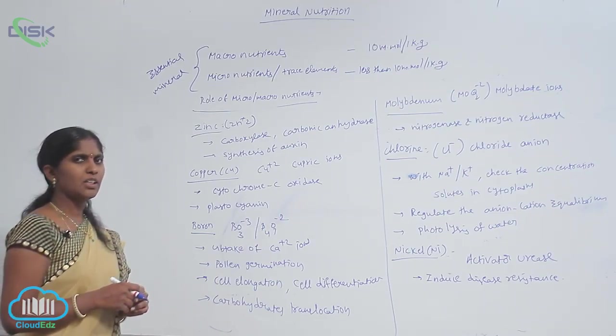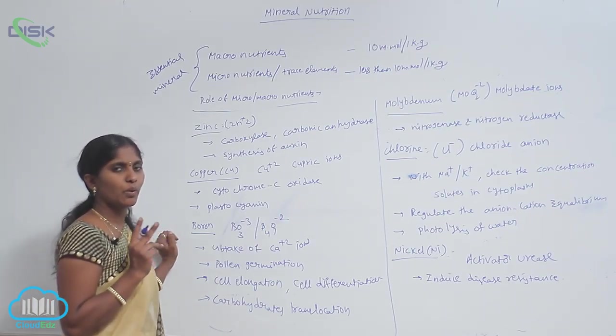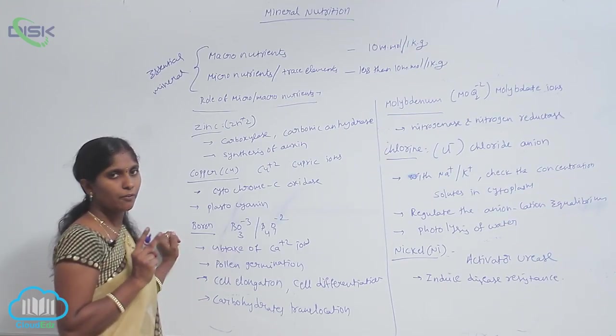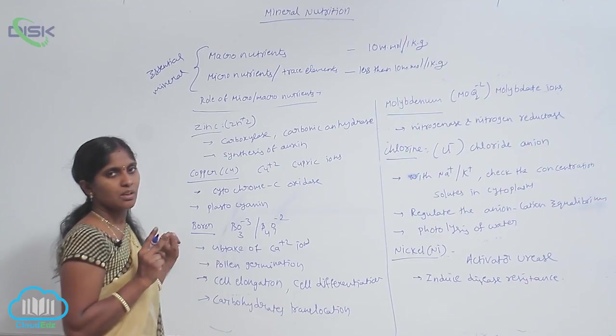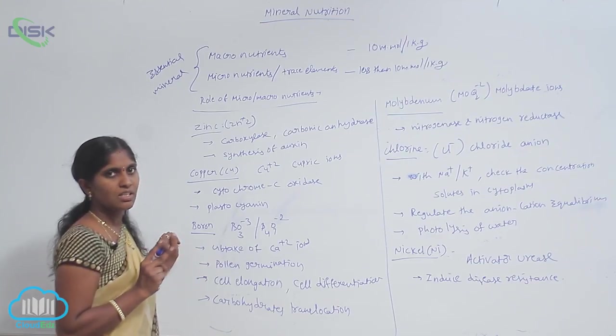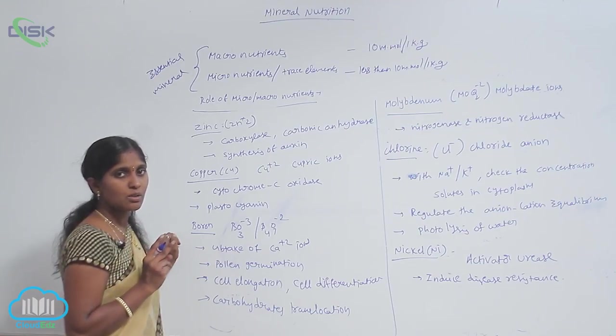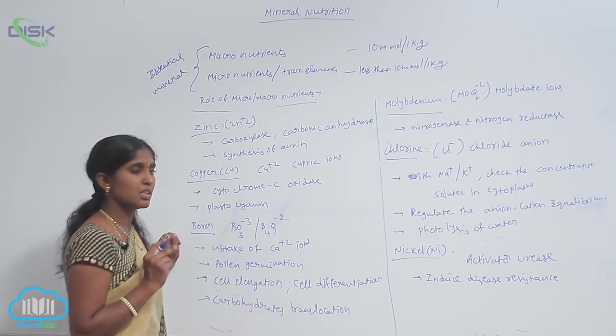Basically, it plays two major roles. One is working as a cofactor for enzymes, carboxylase as well as carbonic anhydrase, and it is also involved in the synthesis of auxins.